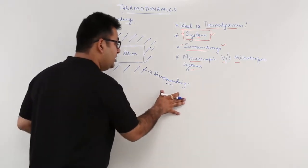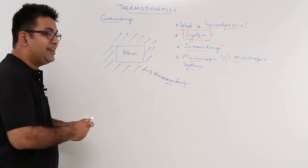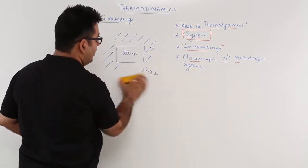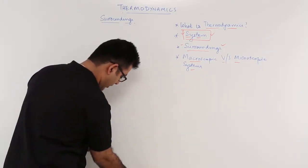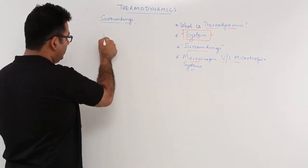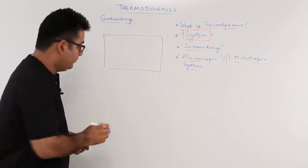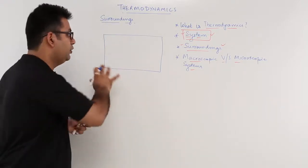Surroundings plus system create a universe. If you draw a very simplified diagram, let me draw a very simplified diagram for you to understand. If this big box is the universe, the entire thing in this universe, this is the universe.